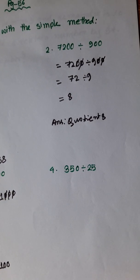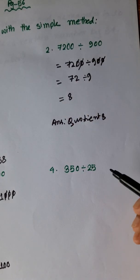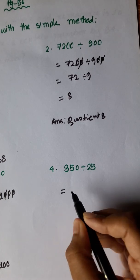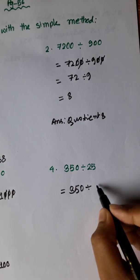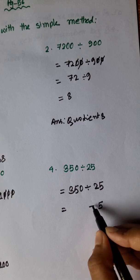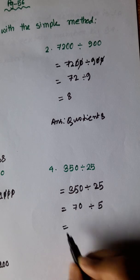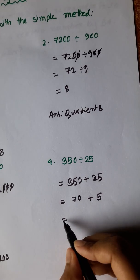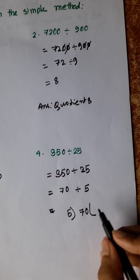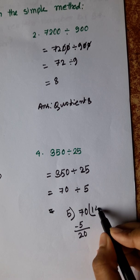And now, 1, 1, 1. 5 ones are 5. 5 fours are 20.